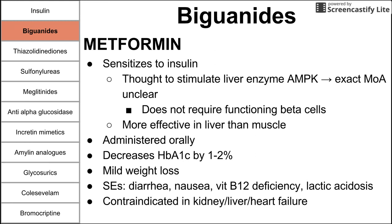Metformin is contraindicated in liver, kidney, and heart failure — so if a patient's kidneys aren't working, don't give them metformin. Metformin is first-line for diabetes type 2, in addition to, or slightly after, weight loss and exercise.